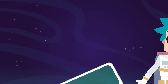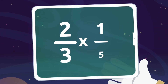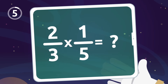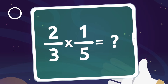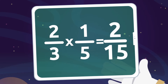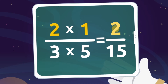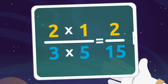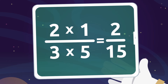Did you understand that? Shall we look at another example? Let's see if you can solve this operation: two thirds multiplied by one fifth equals two fifteenths. Two by one equals two, and three by five equals fifteen. Did you get that right? Amazing!